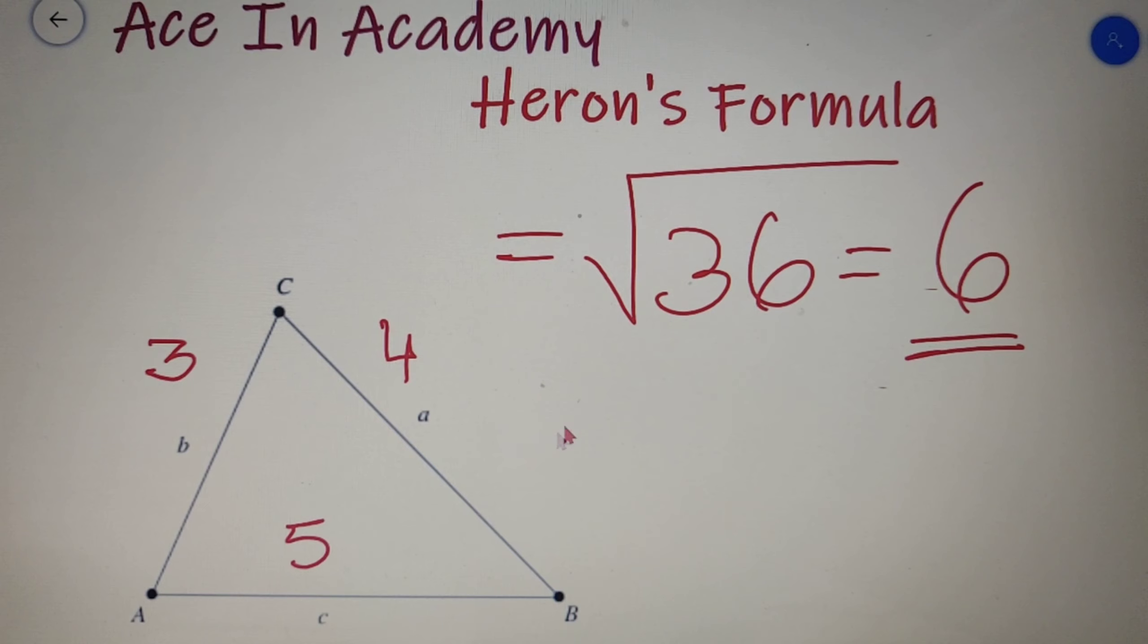So this is how you calculate the area by using Heron's formula of any given triangle given that the lengths of all three sides are provided.